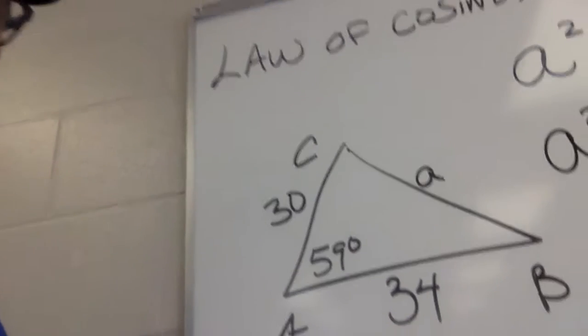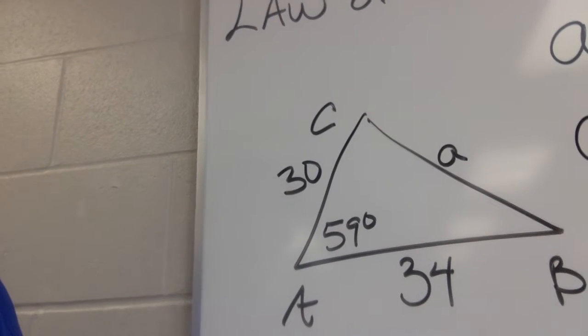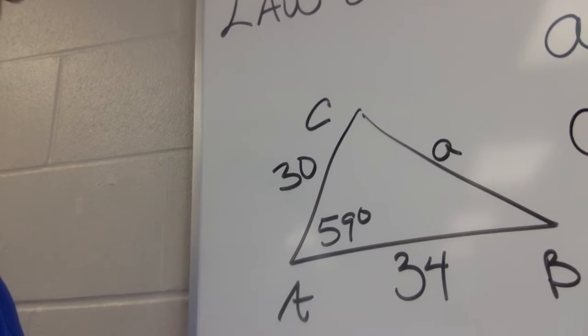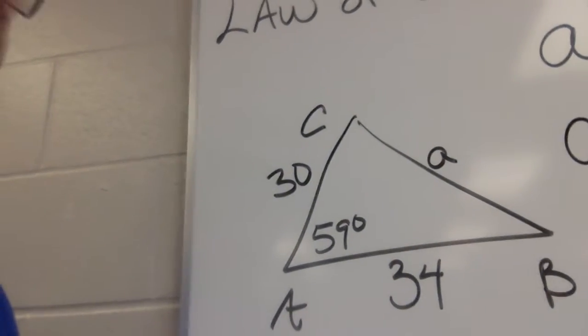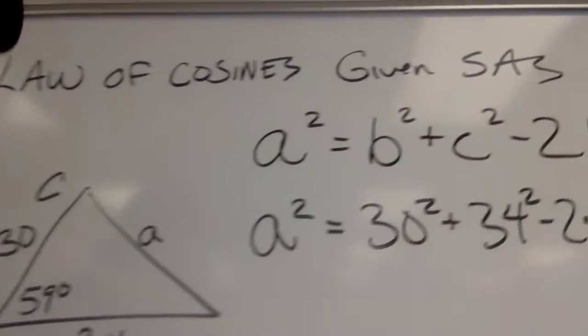Look here. I've got a side, 30. An angle, 59. A side, 34. Hey, this is in fact the easy Law of Cosines.